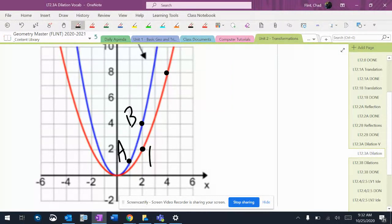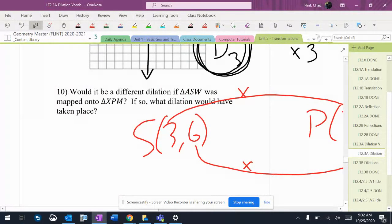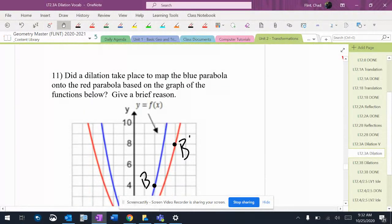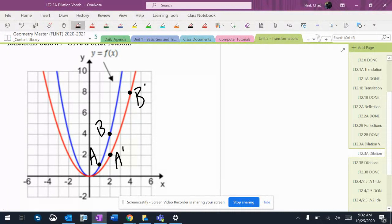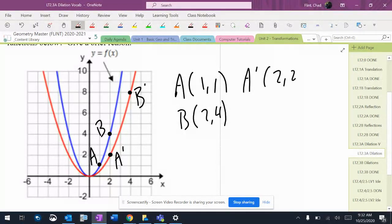Let's make sure that those are right. It says blue on the red, so blue is supposed to be the original. So let's say A is (1,1), B is (2,4), A prime is (2,2), B prime is (4,8).